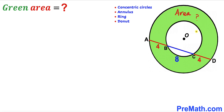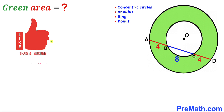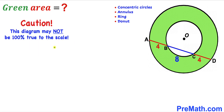The green area in between these two concentric circles is also called the annulus, the ring, or the donut. Please don't forget to give a thumbs up and subscribe, and keep in mind that this figure may not be 100% true to scale.